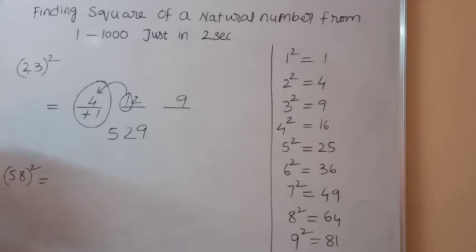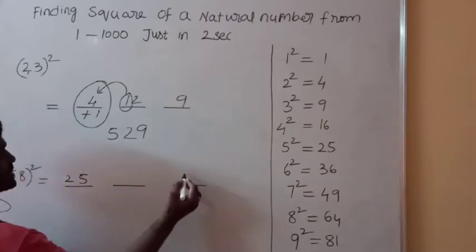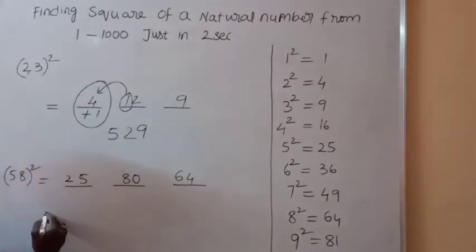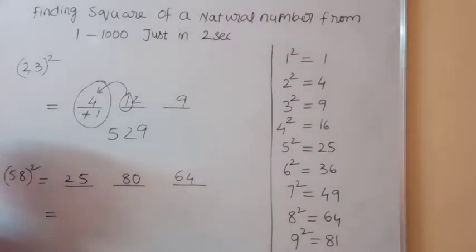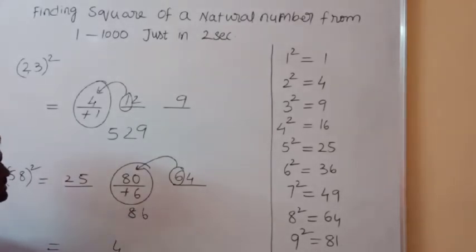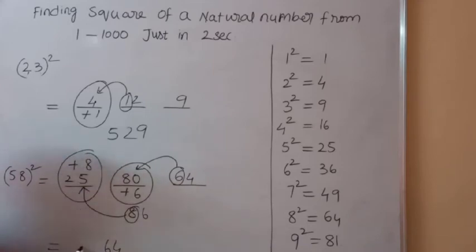Look at one more example: 58 square. What is 5 square? 25. What is 8 square? 64. What is 5 into 8? 40, multiplied by 2 is 80. Last dash: 64 — write 4, carry 6. 80 plus 6 is 86 — write 6, carry 8. 25 plus 8 is 33. Thus 58 square is 3364.